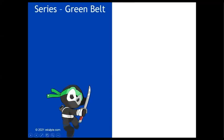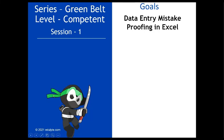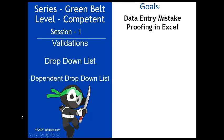In today's video of the series Greenbelt Level Competence Session One, we will learn about data entry mistake proofing in Excel. Some of the commonly used methods or features to reduce the chances of erroneous data entry in Excel are validations, drop-down list, and dependent drop-down list.